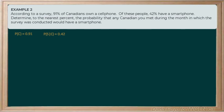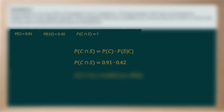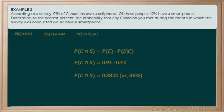So what is this question asking us to find? It would like to know the probability of any Canadian you meet having a smartphone. So we have to read between the lines here. This means that they have a cell phone and that it's a smartphone. So we are looking to calculate the probability of C and S. We can pull up our equation that will help us determine the probability of C and S. And then we can fill in what we know. So we know that the probability of having a cell phone is 0.91 and that conditional probability is 0.42. So when I multiply those together, I get 0.3822, and so we could round that up to being 38% of Canadians would have a smartphone.